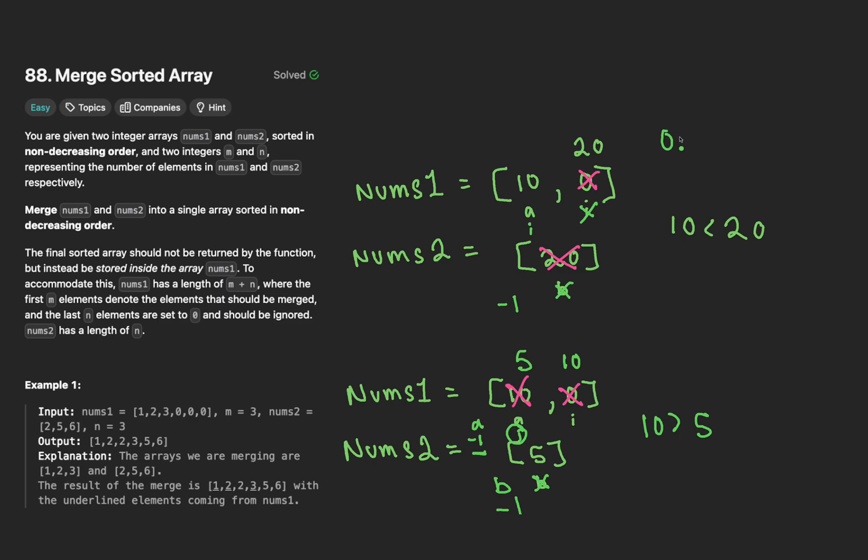The time complexity is big O n plus m. And the space complexity is going to be big O 1 because we did it in place. Now let's go ahead and get to coding.